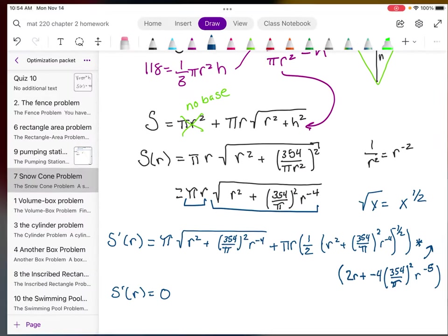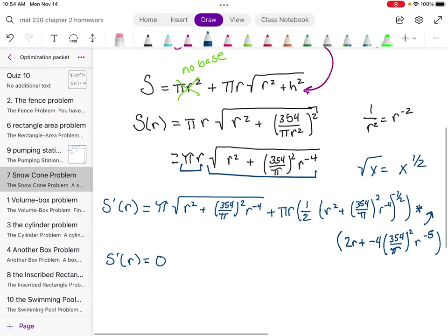So I'm going to go back to my work really quickly. And so r would equal 4.303. Now, if I want to double check that I'm dealing with a minimum, remember, I can sort of do a first derivative test. So s prime, I have my critical point, 4.303, the minimum value of 0.